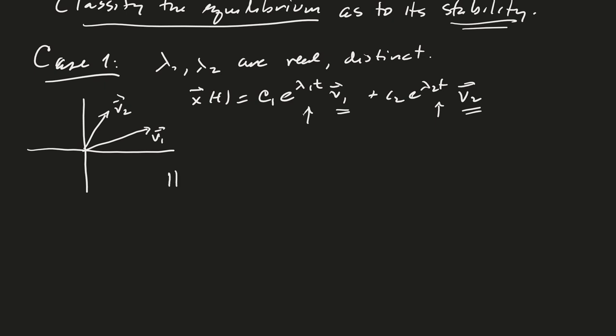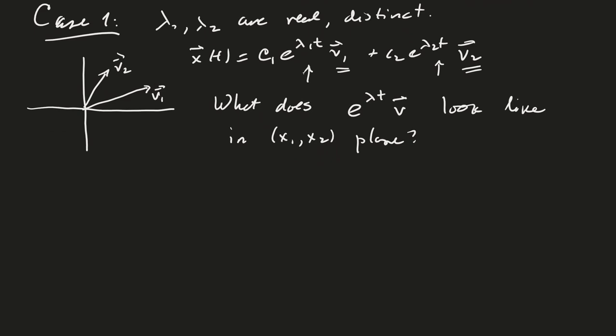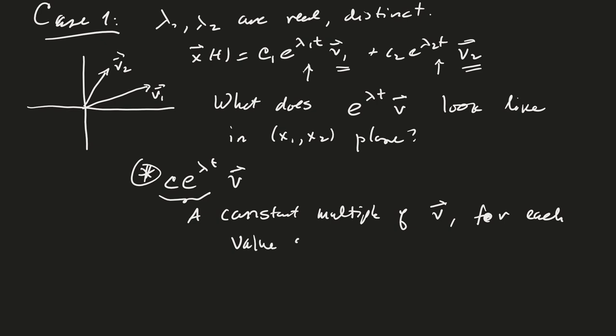Okay, so now, big question: what does e to the lambda T times V look like in our X1, X2 plane? All right, so that could be either V1 or V2. That could be lambda one or lambda two. It doesn't really matter. Well, the key idea here is that e to the lambda T times V, and you could put a constant in front,